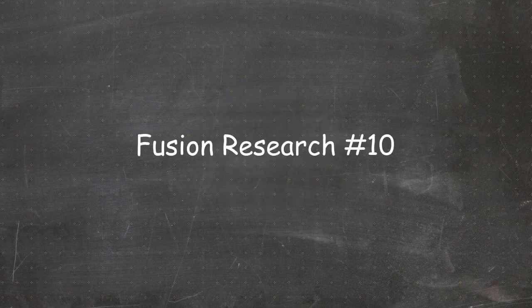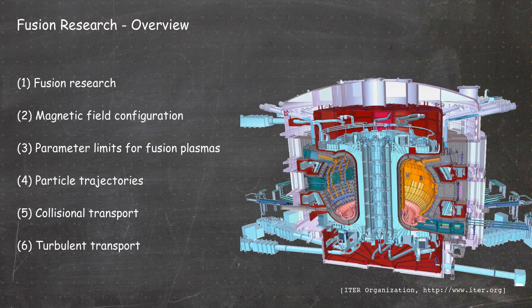Hello everybody and welcome to video number 10 of the free online version of the Fusion Research Lecture. My name is Alf and this is a YouTube channel called Der Plasma. We are in chapter 2 of the lecture called Magnetic Field Configuration. In the last video we talked about magnetic islands, and in the videos before about flux surfaces. In this video we will start to talk about configurations for the confinement, looking at the tokamak.